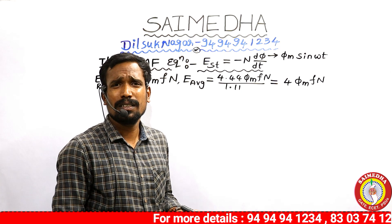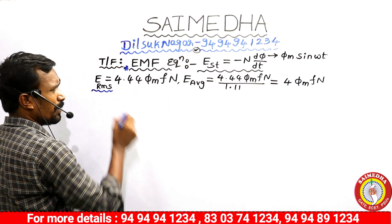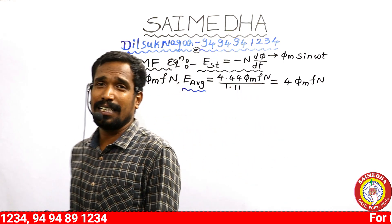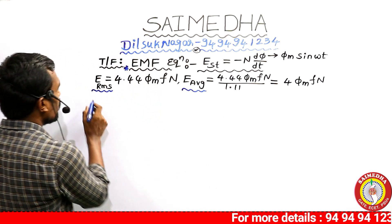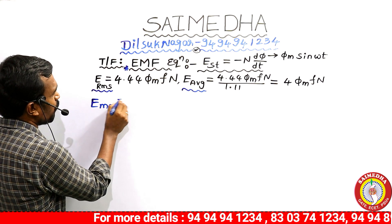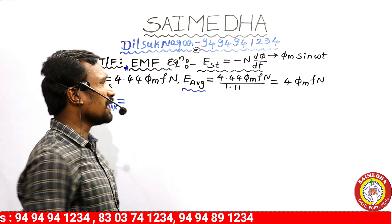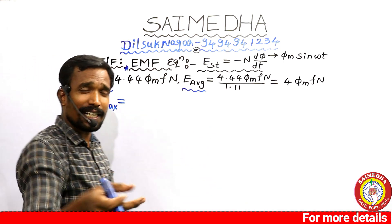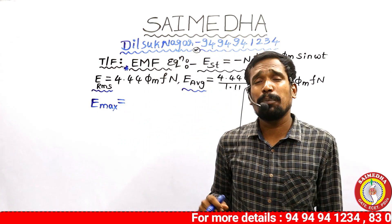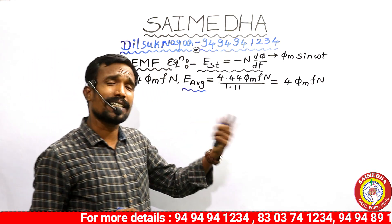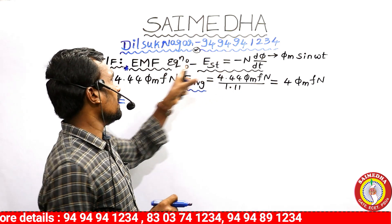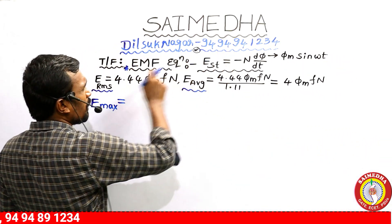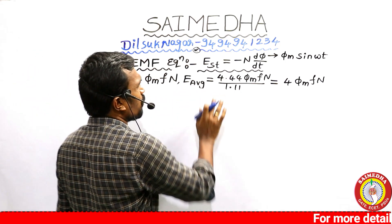So here: the RMS value is 4.44 · Φm · F · N, and the average value is 4 · Φm · F · N. In general exams the RMS value is asked, but if you want the average value, note that. The junior lineman exam asked the average value. Even at ITI level, maximum value questions are asked. For ITI level, diploma level, and B.Tech level, expect these questions in upcoming exams.